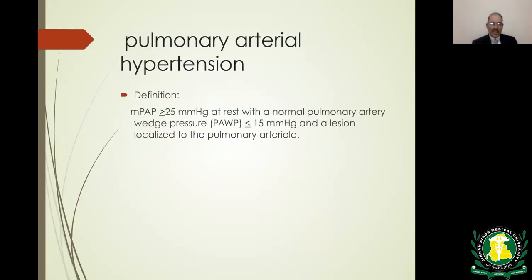By definition, pulmonary arterial hypertension means that mean pulmonary arterial pressure is 25 or above at rest, with normal pulmonary capillary wedge pressure of 15 or less, and the lesion localized to the pulmonary arterial system.